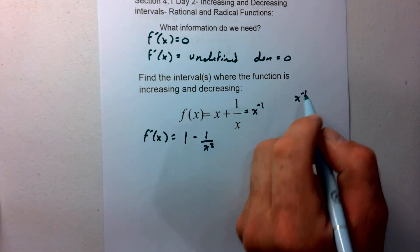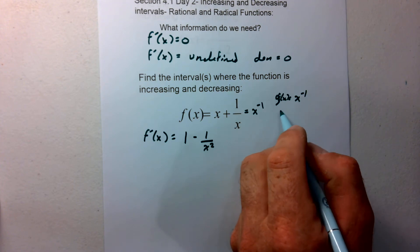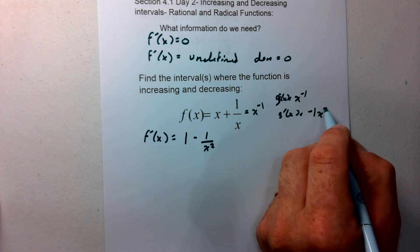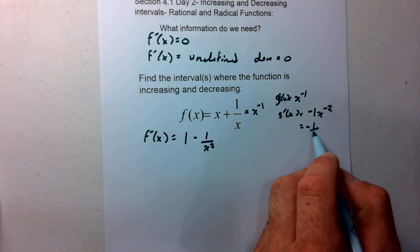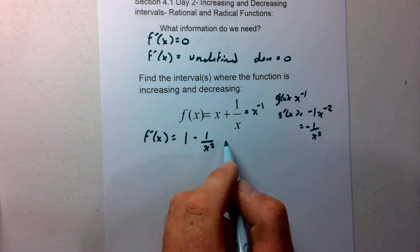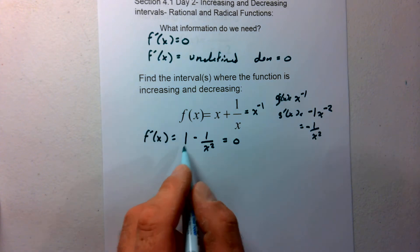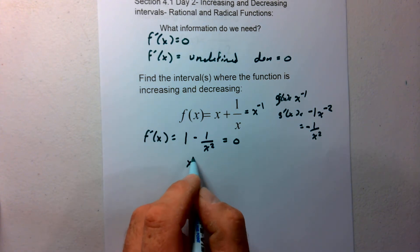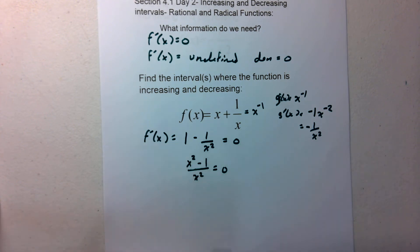If we think about x to the negative first as g(x), then g prime of x is going to be negative 1 times x to the negative second, which takes that x to the negative second back to the denominator as 1 over x squared. We're going to set this equal to zero. I'm going to find a common denominator, giving us (x squared minus 1) over x squared equal to zero.